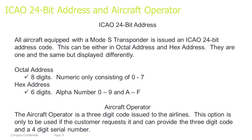Hex address: 6 digits, alphanumeric, 0–9 and A–F. The aircraft operator is a 3-digit code issued to the airlines. This option is only to be used if the customer requests it and can provide a 3-digit code and a 4-digit serial number.